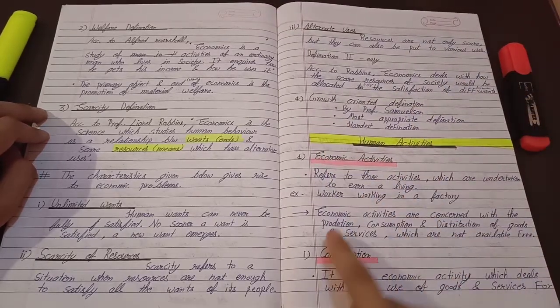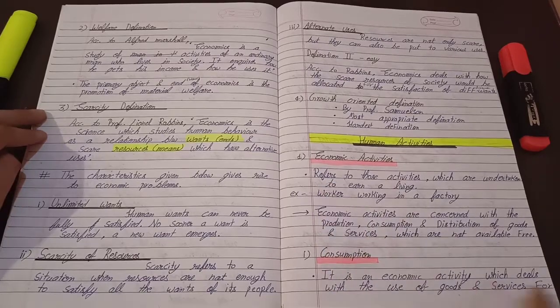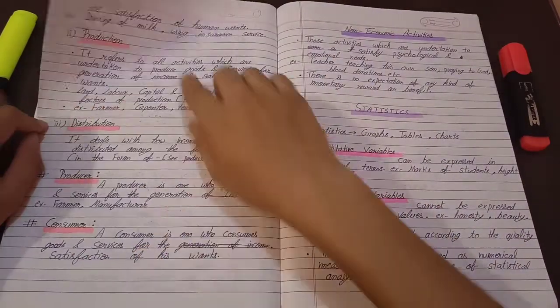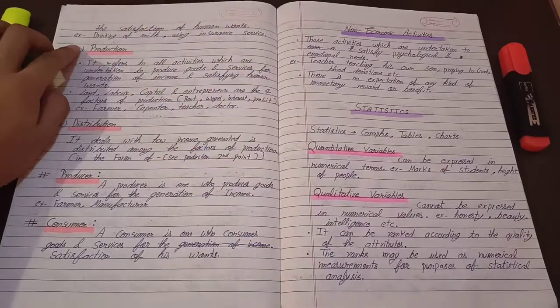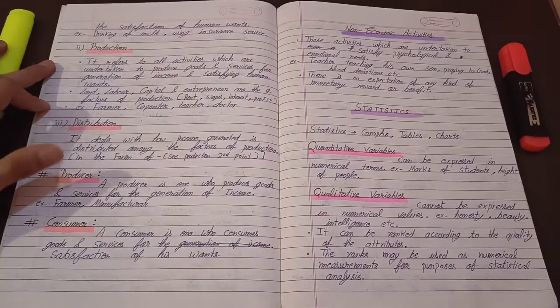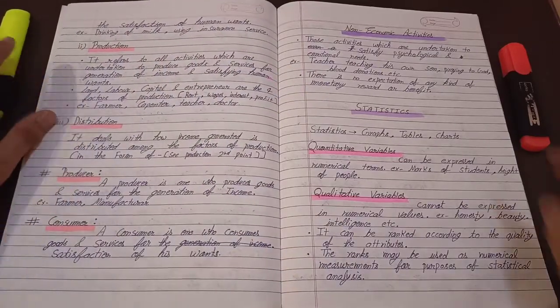Economic activities and in this consumption, then production, then distribution, then what is producer and what is consumer, then finally.